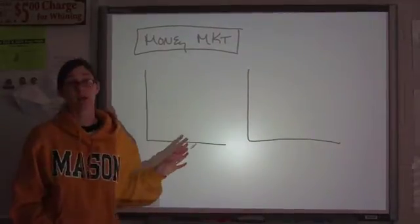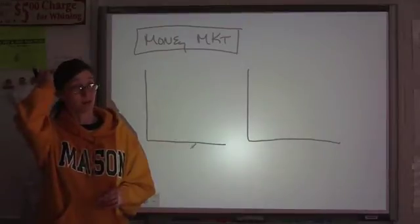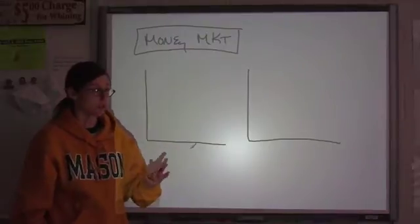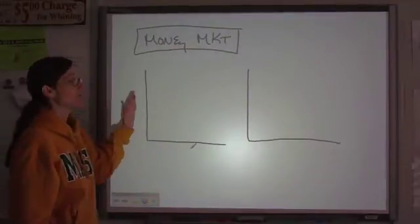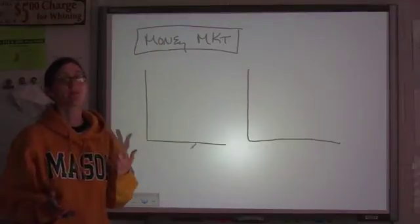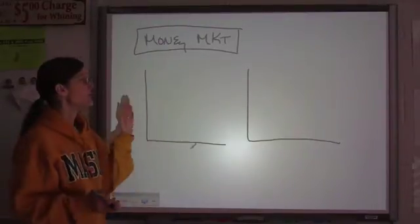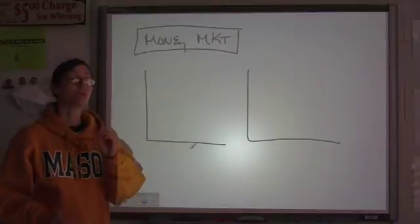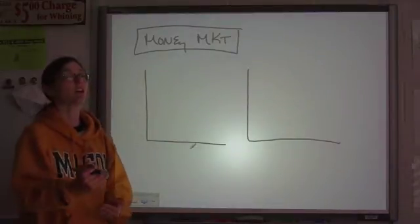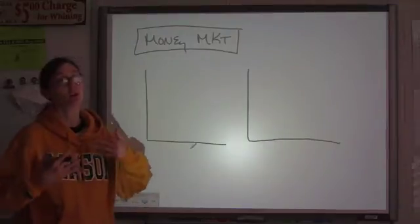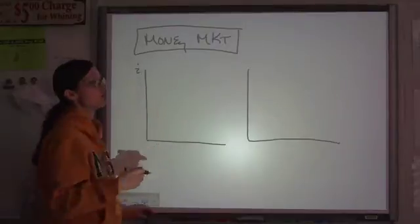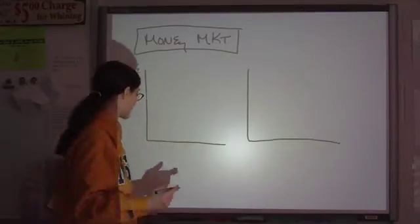For the money market, the first thing you have to be able to do, as with any graph we've done all year, is label your axes correctly. On your vertical axis, just like every other supply-demand graph, you need to have a price. In terms of money, the price you pay to get money is the interest rate incurred when you borrow — interest rate, usually abbreviated with a lowercase i.